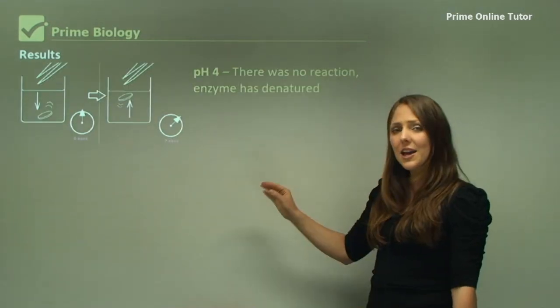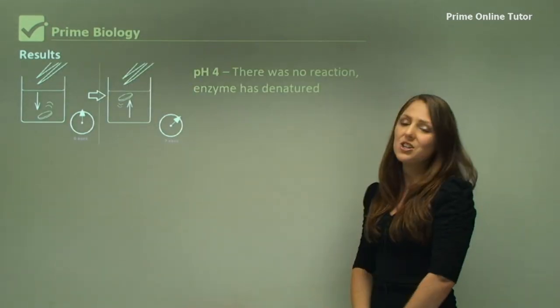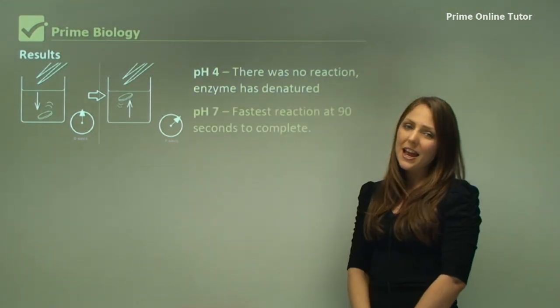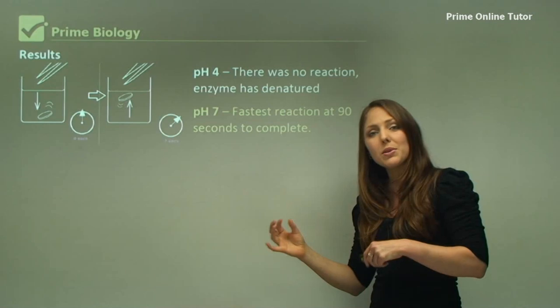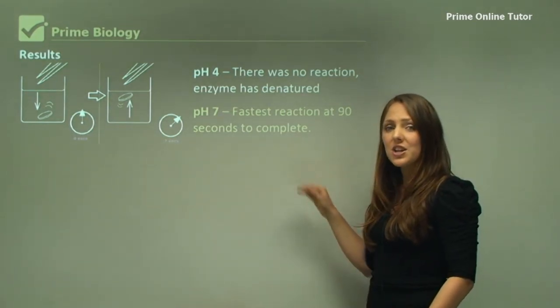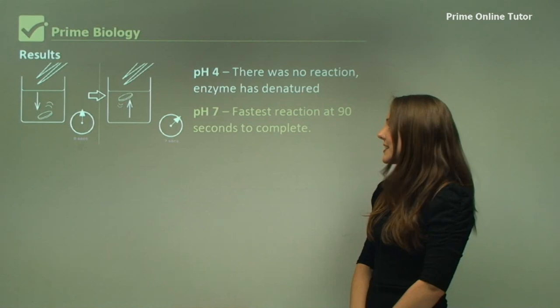Results. Now in the pH of 4, there was no reaction. The enzyme has completely denatured. In a pH of 7, which the enzyme likes around about that pH, it's the fastest reaction in this experiment at 90 seconds to be completed.